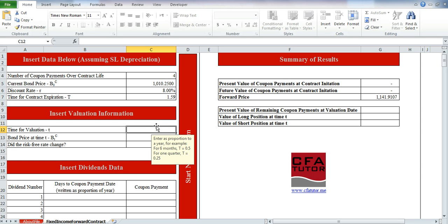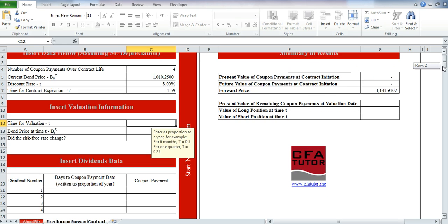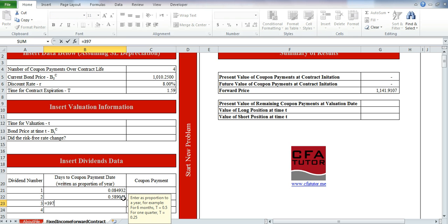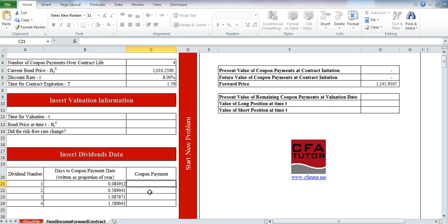This is the time of expiration, which is the difference between 730 minus 150 plus 1, which is the current day. We'll continue with the cash flow data. The first coupon is 31 days from now, divided by 365. The second is 215 divided by 365, 397 divided by 365, 580 divided by 365. And then the coupon payment is 50, 50, 50, 50.